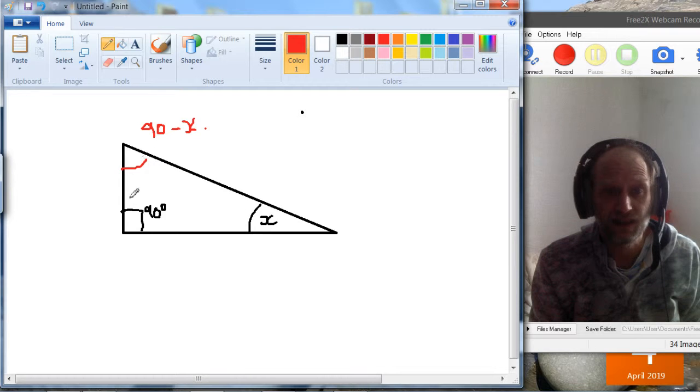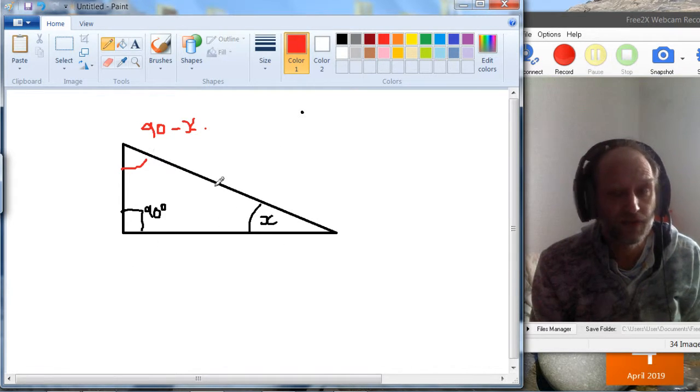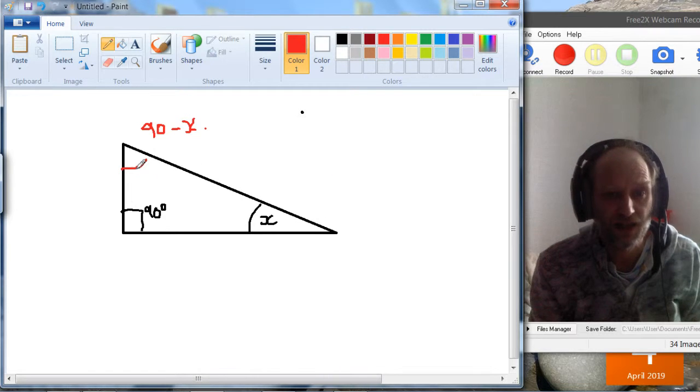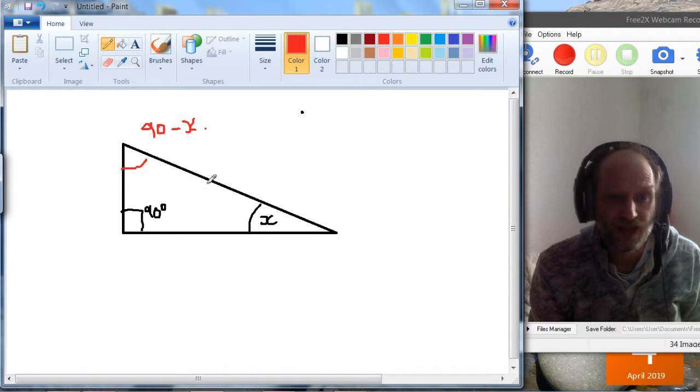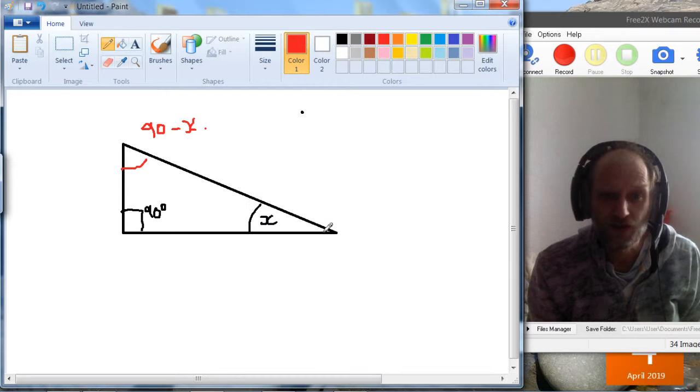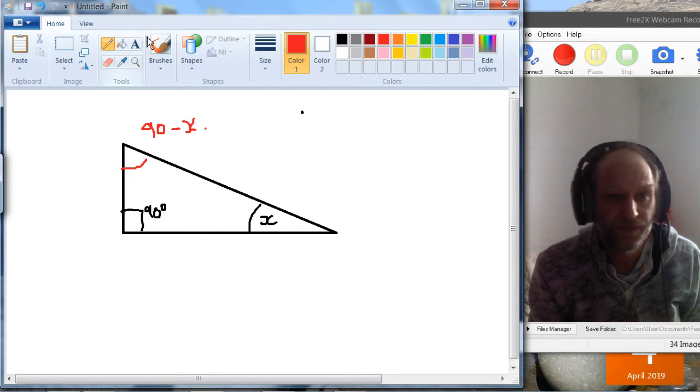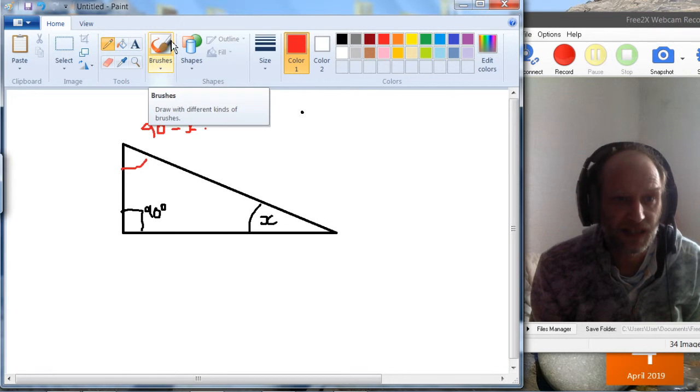And this angle is just going to be 90 minus x. So we know all the angles in this triangle. We don't know how big the triangle is, but if you remember from the last video, then the ratio of these sides doesn't depend on how big the triangle is.